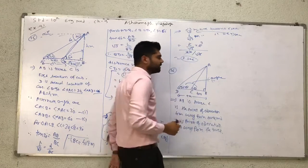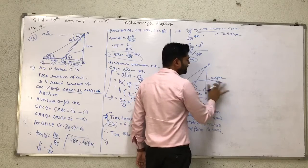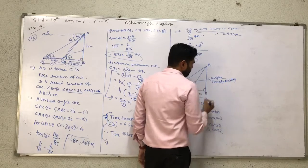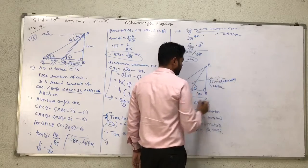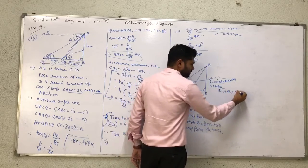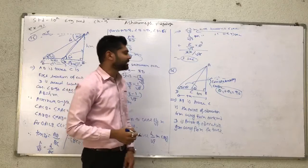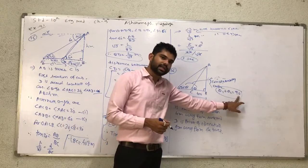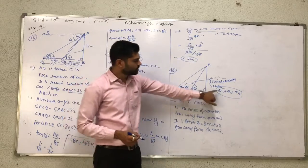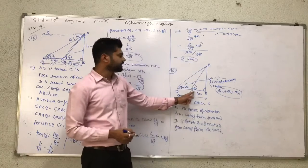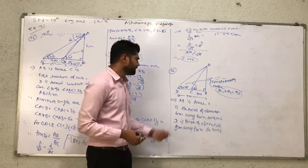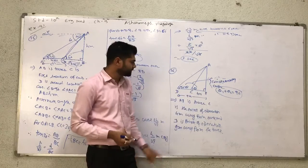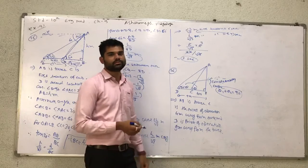Next question. Here, both angles are complementary angles. Complementary angle means any sum of 2 angles is equal to 90 degrees. Supplementary angle means sum equal to 180 degrees. We are given complementary angles, so if one angle is theta, another angle is 90 minus theta. So angle C is equal to theta, angle D is equal to 90 minus theta. Distance BC is equal to 4 meters, distance BD is equal to 9 meters. AB is a tower, and prove that the height of the tower is equal to 6 meters.